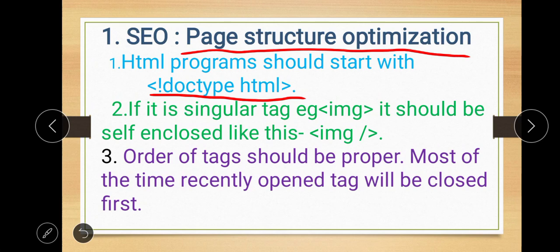The second recommendation is: if it is a singular tag, for example IMG, it should be self-enclosed. Basically, we have two types of tags — one is a container tag, also called a pair tag, with an opening and closing tag. The other is a singular or empty tag, which has just an opening form and should be self-enclosed.